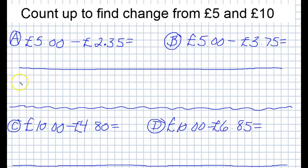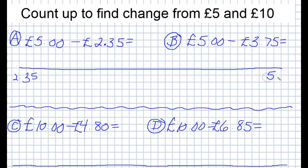So we've got our number line here, and you need to remember that when you're doing this method, at this end of the number line you always start with the smaller number. So we're going to write two pounds thirty-five, and at the other end we write five pounds.